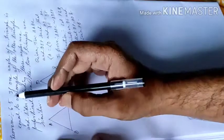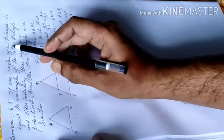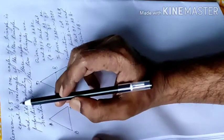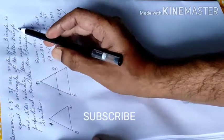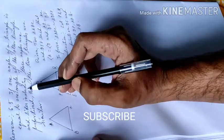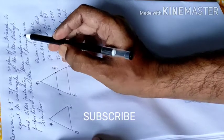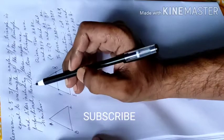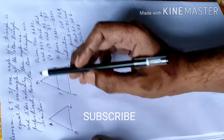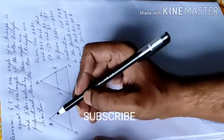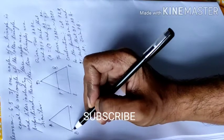Theorem 5: If one angle of a triangle is equal to one angle of another triangle, and sides including these angles are proportional, then the two triangles are similar. Let us take two triangles, one is triangle ABC and another is triangle DEF.